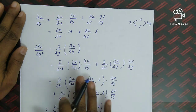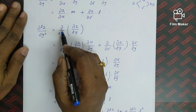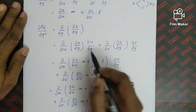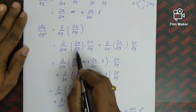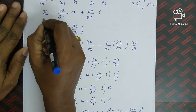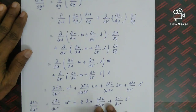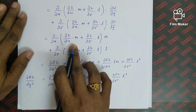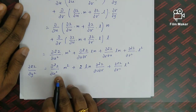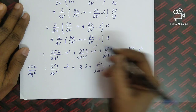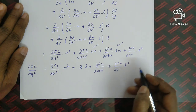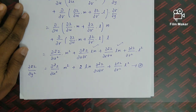Similarly, ∂v/∂y = l. For ∂²z/∂y², we write ∂²z/∂y² = ∂/∂y(∂z/∂y), and using u and v: (∂/∂u)(∂z/∂y)(∂u/∂y) + (∂/∂v)(∂z/∂y)(∂v/∂y). With ∂u/∂y = m and ∂v/∂y = l, multiplying through gives ∂²z/∂y² = m²(∂²z/∂u²) + 2lm(∂²z/∂u∂v) + l²(∂²z/∂v²). We call this equation 2.